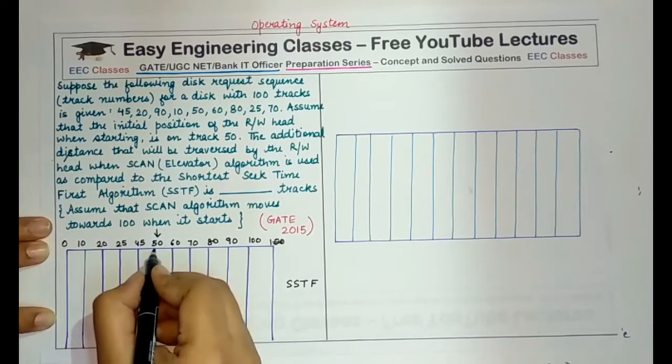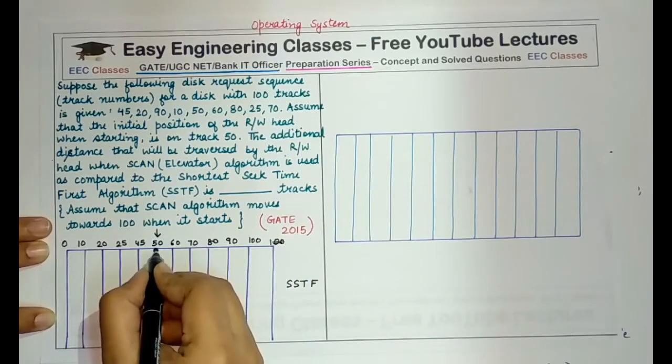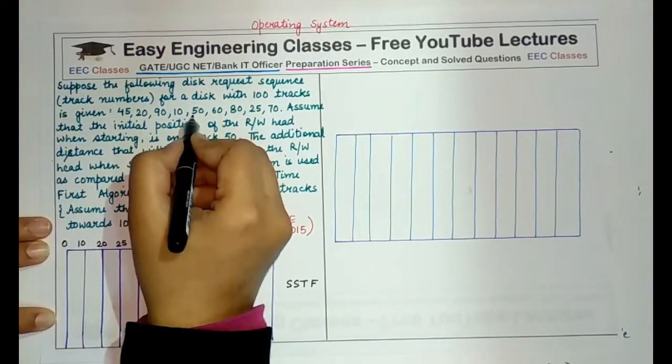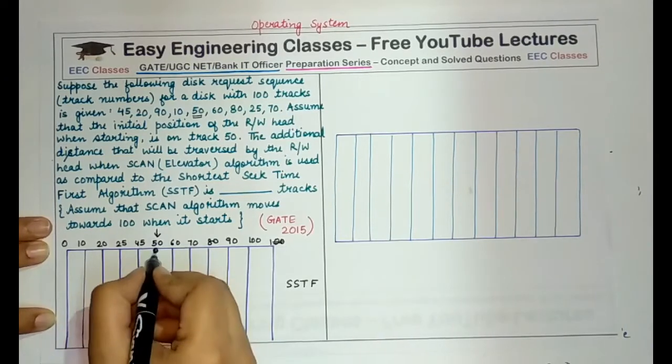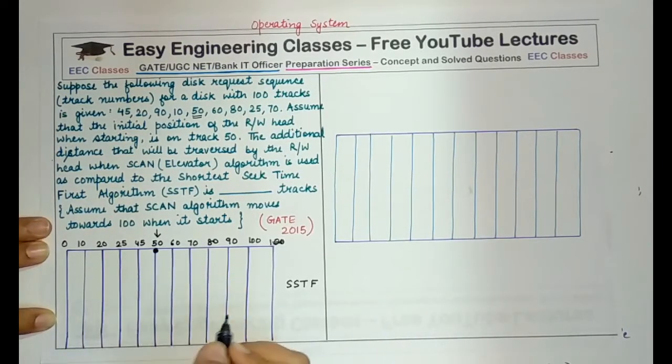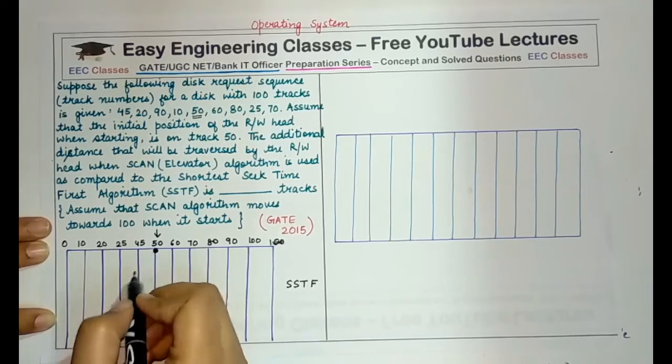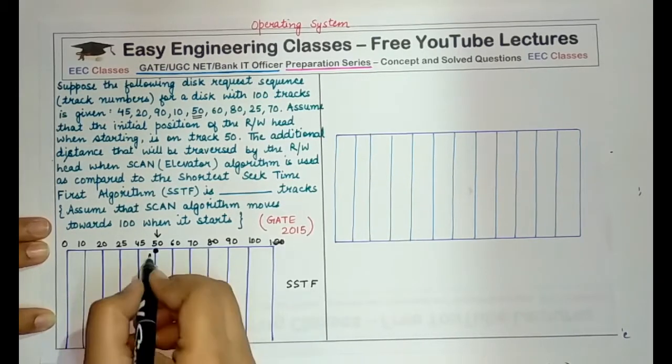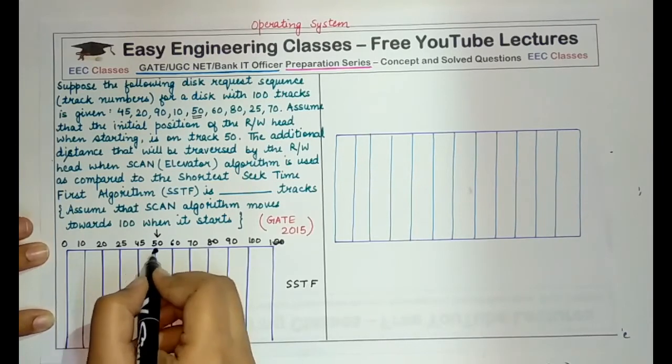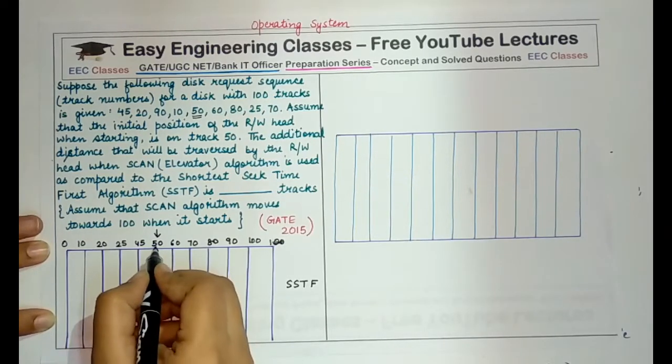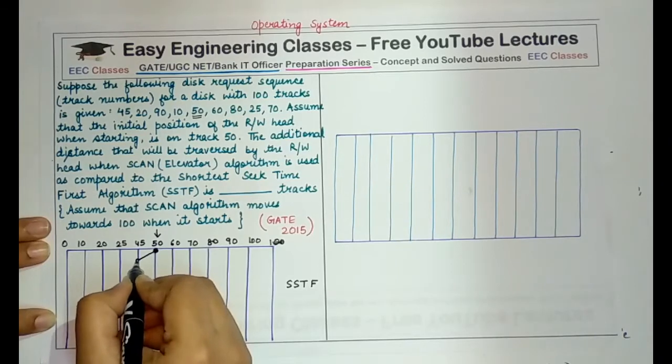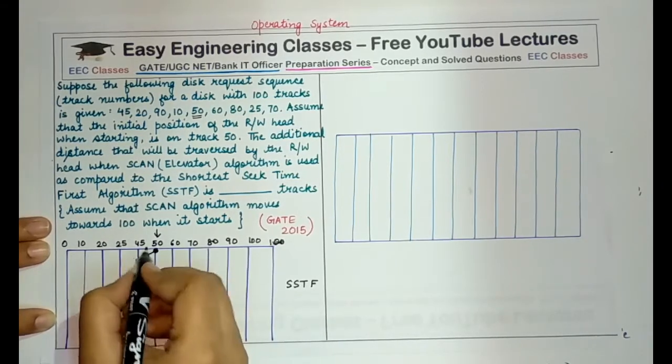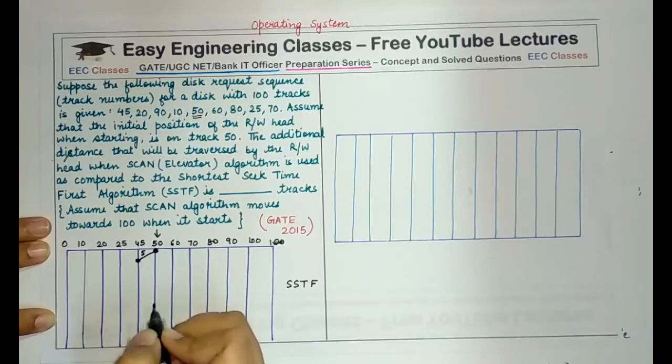So initially disk is at this position and since 50 is a particular request, that means we have to serve a particular request at track 50. So we serve the first request here itself. Then the shortest distance or the shortest seek time from 50 can be either to 45 or to 60, but 50 minus 45 is less than 60 minus 50. Therefore, we move towards 45 and service 45 here. This requires a seek time of 5 units.